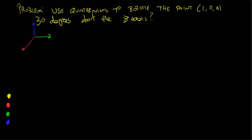We're looking at a point here — I'll go back to yellow — that is right there at 1 on the x-axis. You're going to know the answer: if you rotate this 30 degrees about the z-axis, you should know the answer by basic trig. It's not going to rotate past 45 degrees, so it's going to be somewhere around √3/2 in the x, 1/2 in the y, and 0 in the z. You do problems you know the answer to so you can test the method.